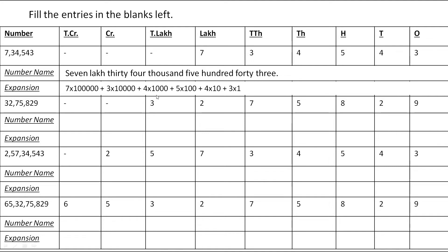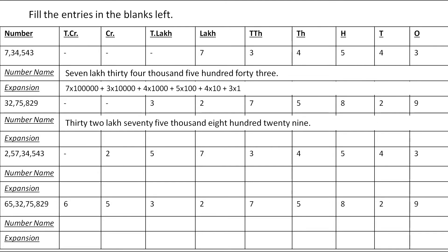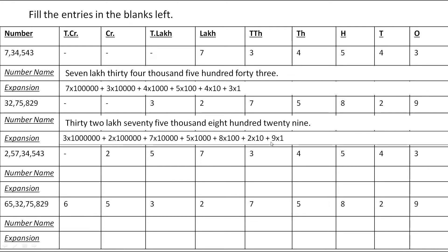Now let's see the number name of the next example. In this example, 32 comes in the Lakh group, 75 is in the Thousands group, and then 829. So the number name is 32,75,829. The expansion is: 3 × 10 lakh + 2 × 1 lakh + 7 × 10,000 + 5 × 1,000 + 8 × 100 + 2 × 10 + 9 × 1.